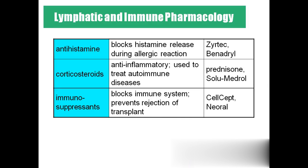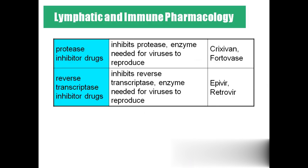Immunosuppressants block the immunity and are mostly given during transplantation surgeries to prevent rejection. Protease inhibitor drugs inhibit the protease enzyme, which is needed for the virus to reproduce. Reverse transcriptase inhibitor drugs are usually given for AIDS patients to prevent virus activity in the body — they decrease the infection but do not prevent it entirely.